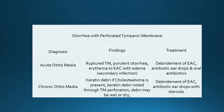Chronic otitis media can occur in an ear with or without a cholesteatoma. Chronic otitis media is often times observed with long-standing eustachian tube dysfunction. The formation of a cholesteatoma is thought to be secondary to the chronic eustachian tube dysfunction and the chronic otitis media. Although an in-depth discussion regarding cholesteatoma is outside the scope of this module, it is important for the nurse practitioner or physician's assistant to have a general understanding of how a cholesteatoma is formed as well as where they are generally located upon physical exam.